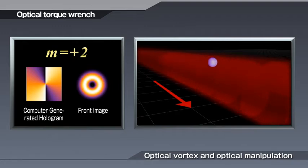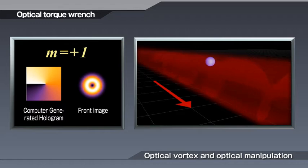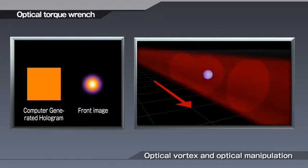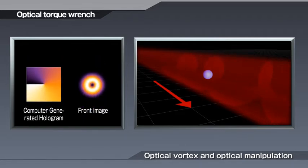An optical vortex has force sufficient to rotate tiny matter of a few microns in size. The rotational force from the optical vortex can be controlled by changing the orientation and pitch of the corkscrew wavefront.